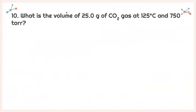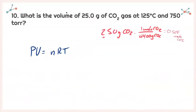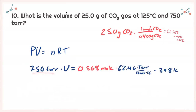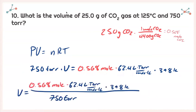Last one: what is the volume of 25.0 grams of carbon dioxide gas at 125°C and 750 torr? I write PV = nRT. Given grams, so I convert using the molar mass of CO₂: 25.0 g gives 0.5681 moles of CO₂. Plugging in: pressure is 750 torr, so I use the R value for torr. 125°C converts to 398 K. Isolating V and solving, I get a volume of 18.8 liters.